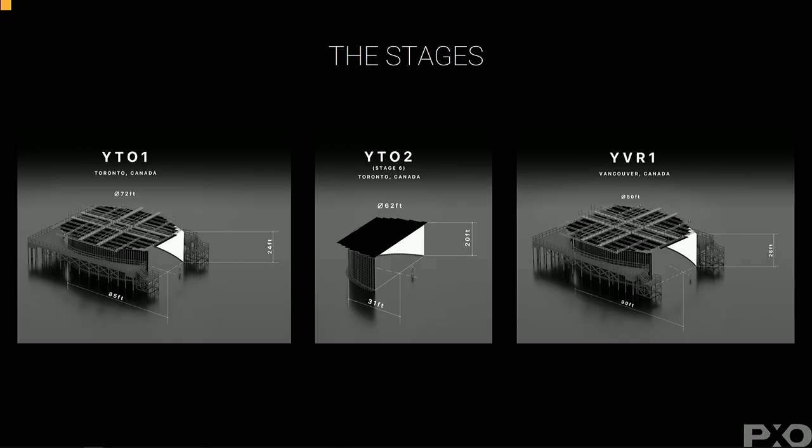Just a quick overview of our stages. Toronto number one is on the left — that's mostly what we're going to be talking about today. YTO2 is our R&D stage, a little bit smaller. And YVR1 is our Vancouver stage, which is one of the largest, if not the largest in the world at the moment.